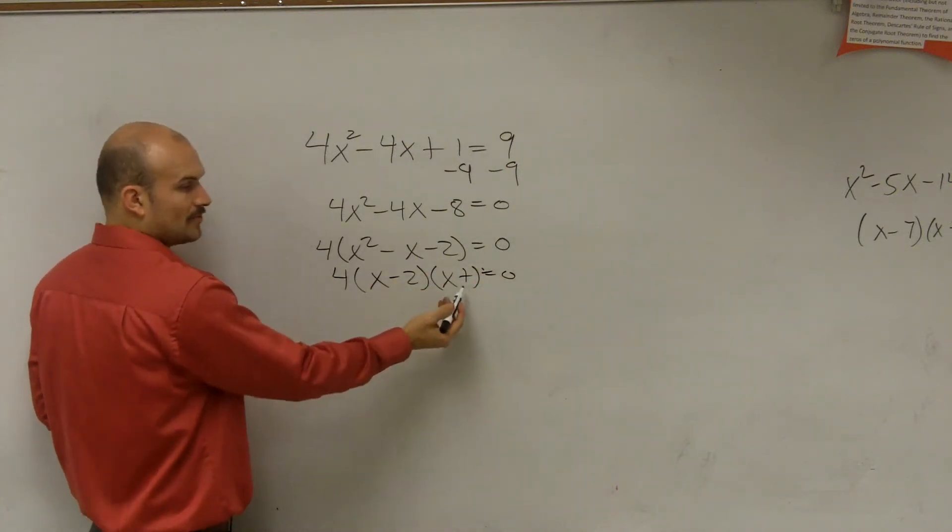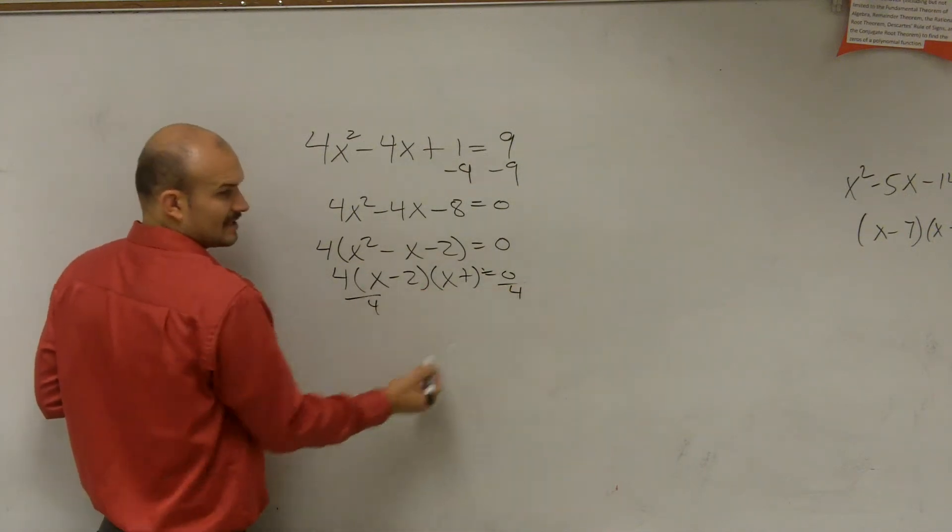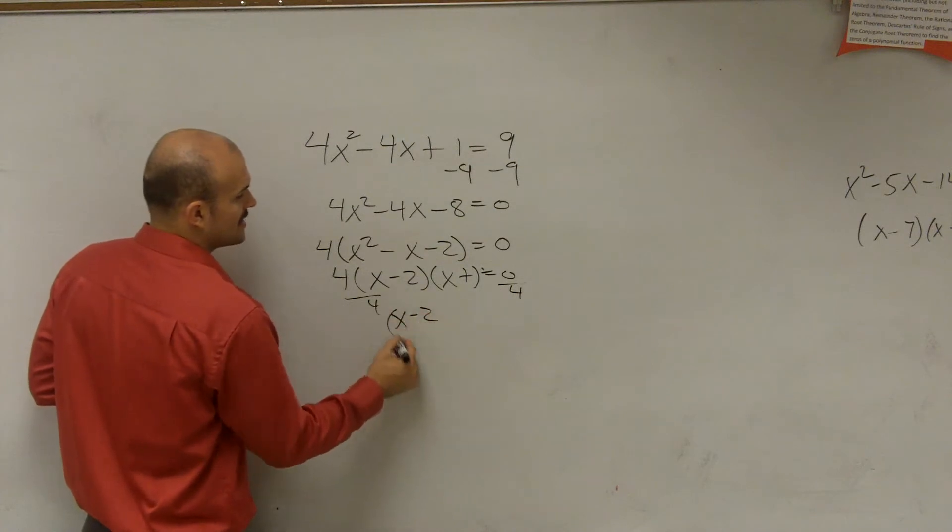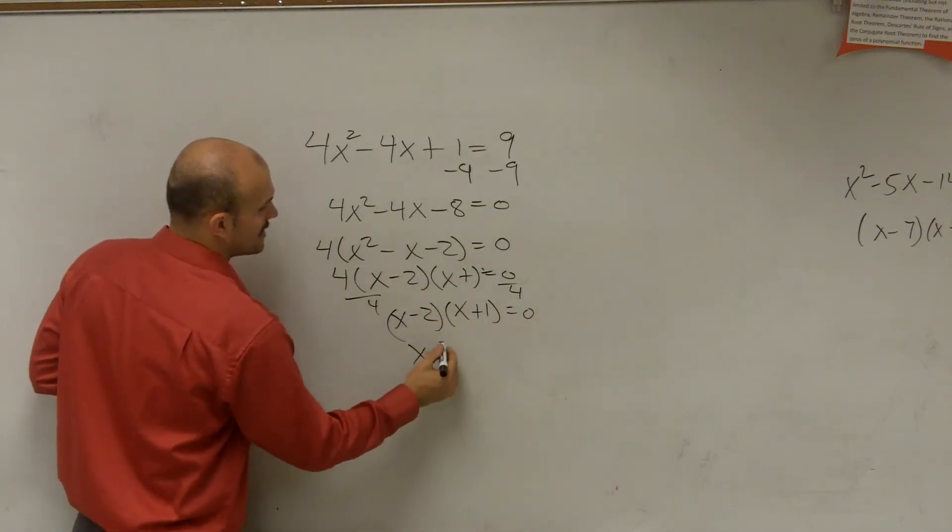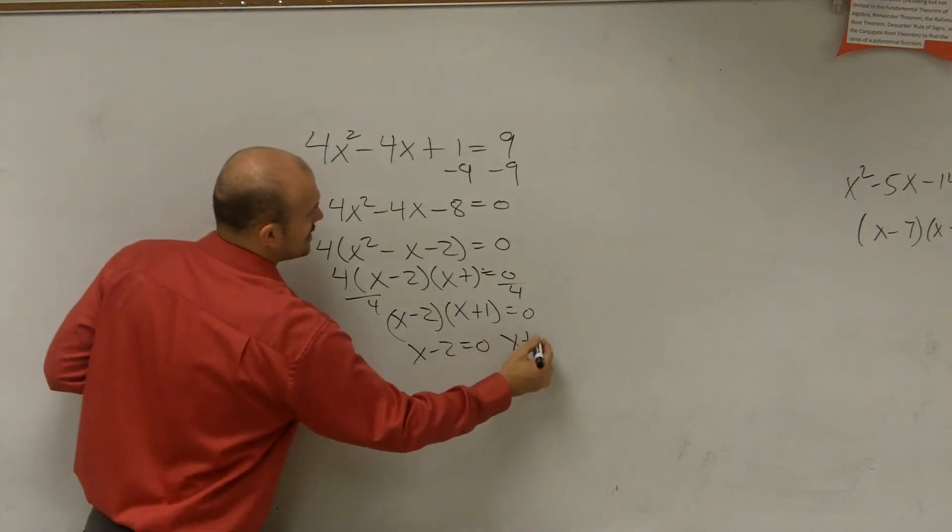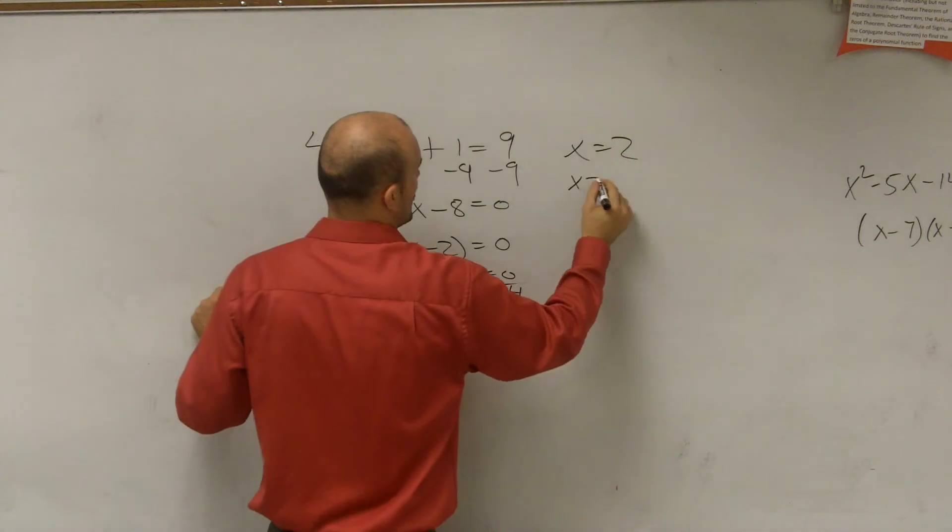Now, since these two are multiplied to give you 0, you can divide by 4 to get rid of the 4. So you could say x minus 2 times x plus 1 equals 0. Therefore, x minus 2 equals 0, x plus 1 equals 0. So we could say x equals 2 and x equals negative 1.